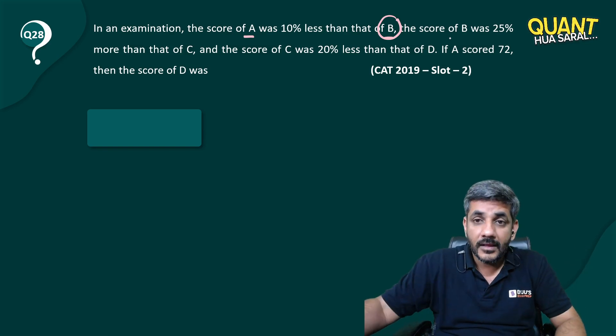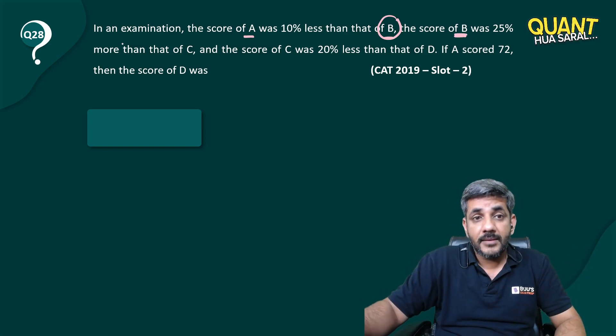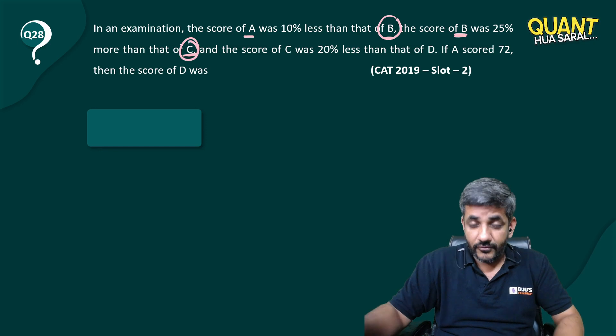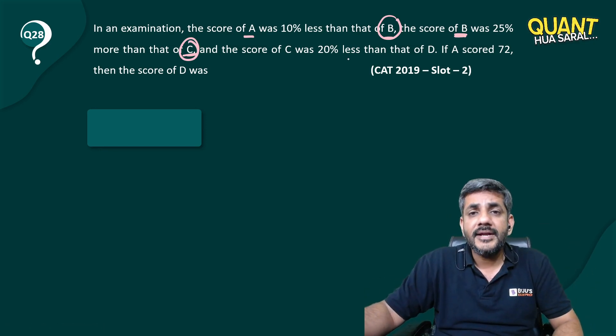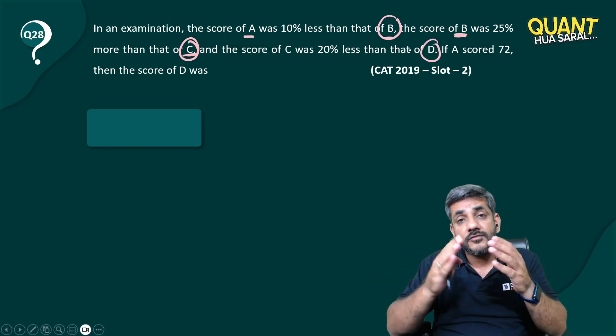The score of B is 25% more than C, so for the score of B, C is the base. The score of C was 20% less than D, so for the score of C, D is the base.